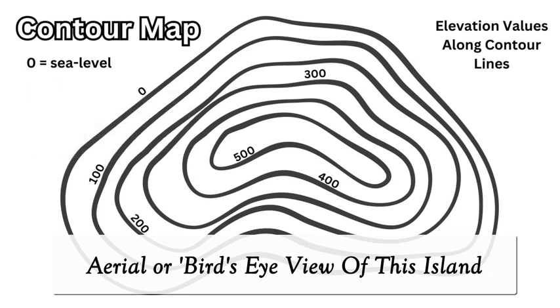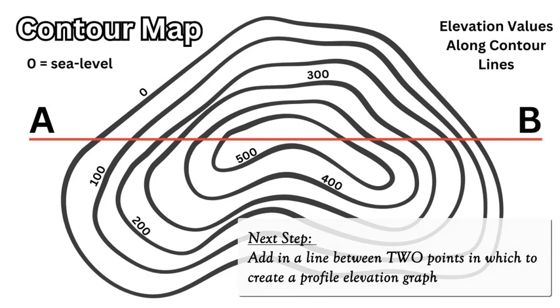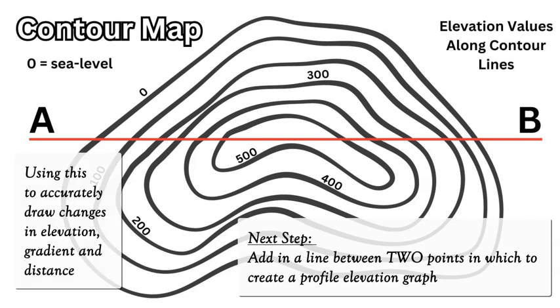To change from an aerial perspective contour map onto a side profile graph to show accurate elevation and also gradient or slope, first I have to establish what I'm going to analyze, so I'm going to draw a line, this red line, which could indicate a hiking path along the surface of the island. We're going to use this to accurately look at the gradient, the change of elevation, and the distance between the contour lines from A to B.